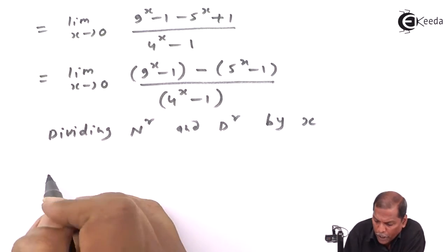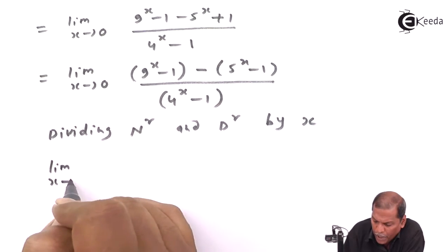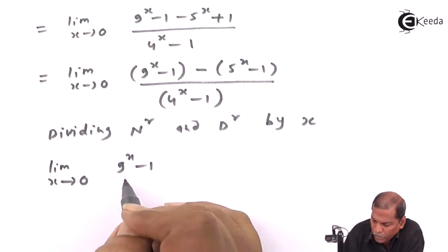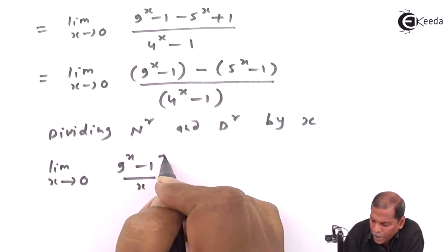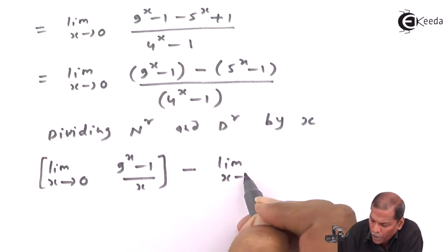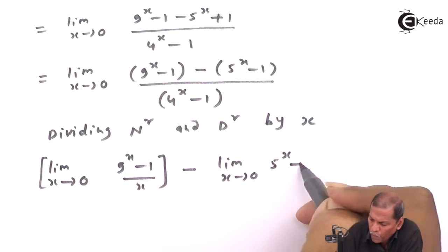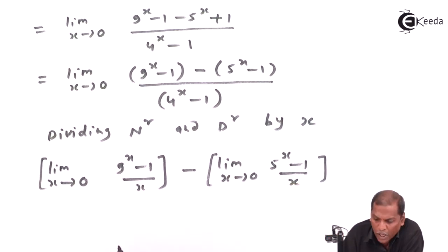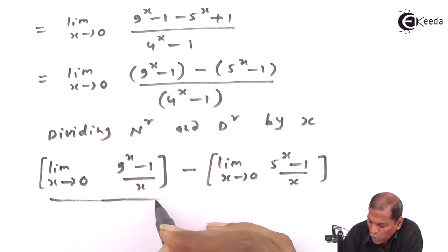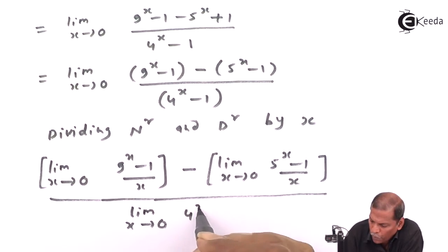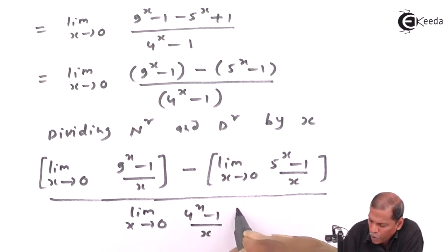The next step is: limit as x tends to zero of nine raised to x minus one upon x as the first limit, minus limit as x tends to zero of five raised to x minus one upon x as the second limit, whole thing divided by limit as x tends to zero of four raised to x minus one upon x.